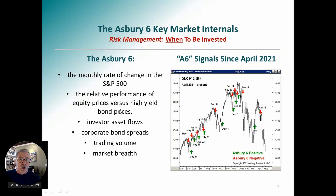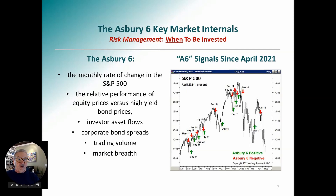The Asbury 6 includes one price-driven part — the monthly rate of change in the S&P 500 — but the other five components are things that can't be controlled by computers trading during the day: relative performance of stocks versus bond prices, investor asset flows, corporate bond spreads, trading volume, and market breadth. The A6 also went to negative on April 12th. It went to negative on January 14th, back to positive on March 17th, and back to negative on April 12th. So both tactical models are telling us risk off since April 12th.